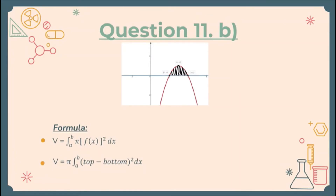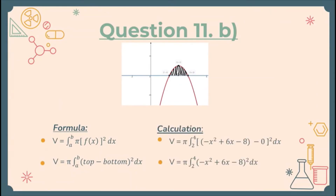Also, since it revolves around the x-axis, we look at the top line minus the bottom. If it were the y-axis, we would use right minus left. We'll be using top minus bottom because it revolves around the x-axis.